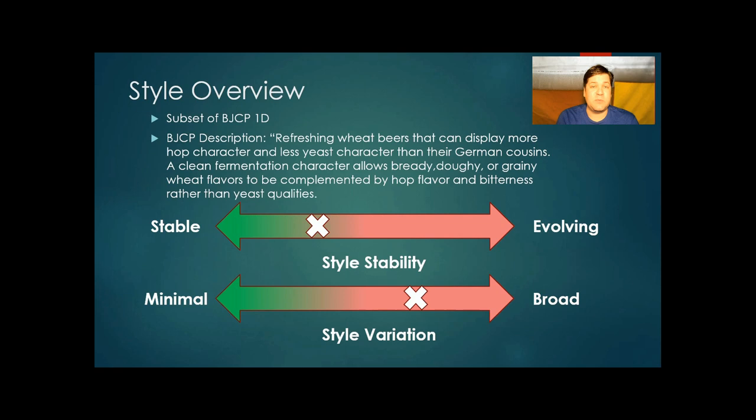It's a subset of BJCP 1D. BJCP describes: refreshing wheat beers that can display more hop character and less yeast character than their German cousins. A clean fermentation character allows bready, doughy, or grainy wheat flavors to be complemented by hop flavor and bitterness rather than yeast qualities. Through my data, I found that this has evolved over time, and the balance of the beer has changed between the 2002-2019 dates of entries.